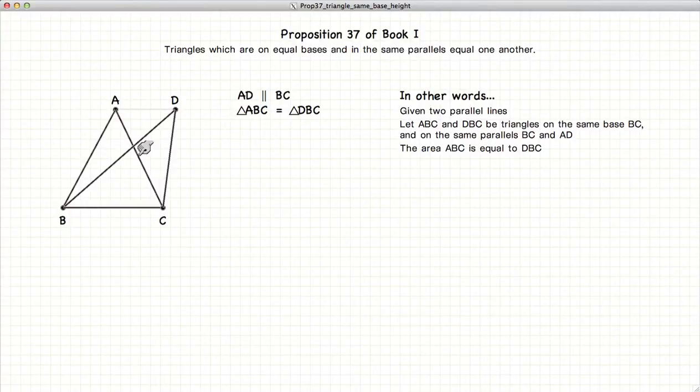It states that if you have two triangles which share the same base and whose vertices are on a line that is parallel to the base, then the two triangles are equal in area.